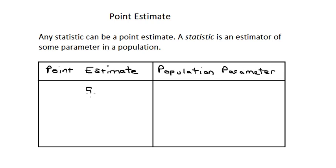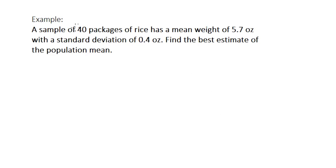The sample standard deviation s is a point estimate for the population standard deviation sigma. The sample mean x̄ is a point estimate for the population mean μ. And one more example, the sample variance s² is a point estimate for the population variance σ².